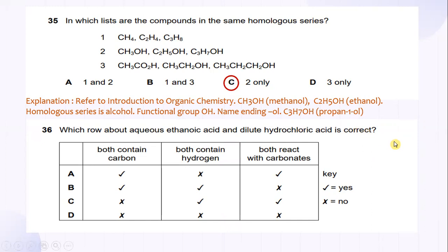And which row about aqueous ethanoic acid and dilute hydrochloric acid is correct? So, the answer is C. Both contain carbon, which is no. Both contain hydrogen, which is yes. And both react with carbonate, is yes.